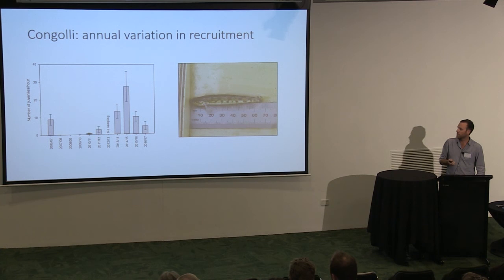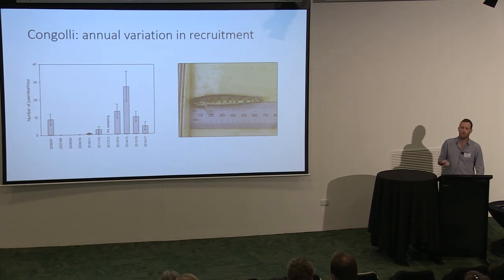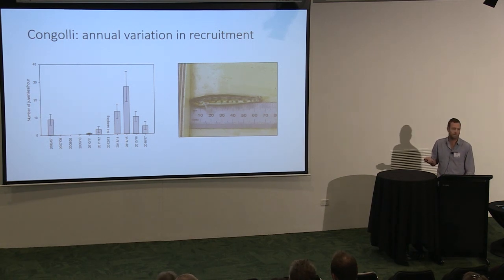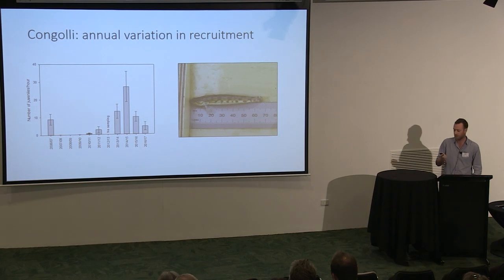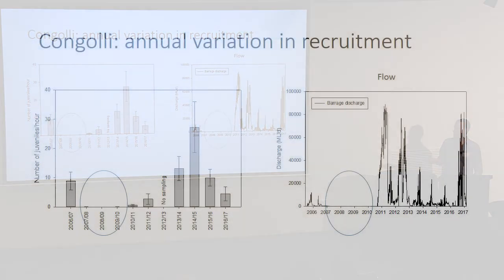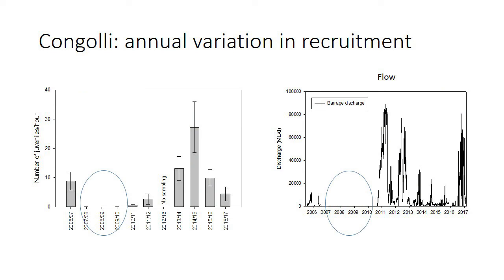This plot represents the abundance of upstream-migrating juveniles at a fishway on Itchery Barrage since 2006. Abundance has been highly variable, and most notably from 2007 to 2010 these young-of-year were pretty much absent — coinciding with the Millennium Drought and loss of connectivity between freshwater and estuarine habitats.